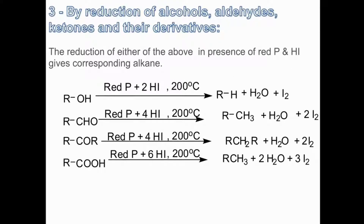The third method is by reduction of alcohols, aldehydes, ketones, and their derivatives. If you have any alcohol and react it with red phosphorus plus 2HI at 200°C, you obtain alkanes. If you reduce an aldehyde with red phosphorus and 4HI at 200°C, you get alkanes. If you have a ketone and react it with red phosphorus at elevated temperature, you get alkanes. Similarly, carboxylic acid reacted with red phosphorus at high temperature gives alkanes as product. So alkanes can be synthesized from alkenes, alkynes, alkyl halides, alcohols, aldehydes, ketones, and acids.